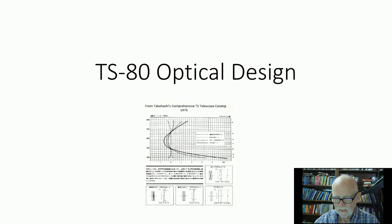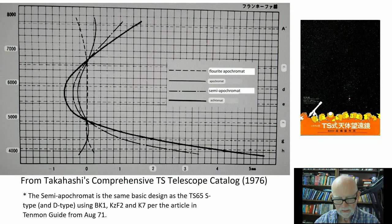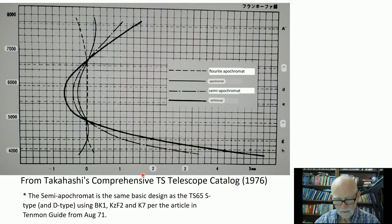This curve is from a catalog produced by Takahashi. And it gives you an idea of the various configurations that are possible, from a fluoride apochromat down to an achromat. Now, the simplest kind of lens is an achromat. This would be the curve of an achromat. This represents the curve of the semi-apochromat. You can see that it's considerably improved. This is essentially the focal plane here.